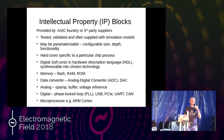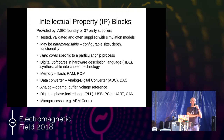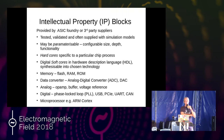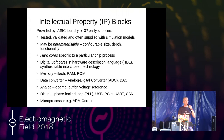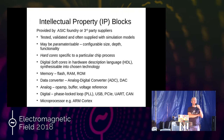IP blocks come in two kinds: hard cores, which are specific to a particular chip process, and soft cores, which come in a hardware description language and can be synthesized into your own process. Available blocks include ADCs, DACs, op-amps, buffers, phase-locked loops, bus cores such as PCI Express, CAN bus for automotive, and USB. You can even buy an entire processor — this is ARM's business model. ARM don't actually make processors; they sell processor cores to third parties who integrate them into their own chips.